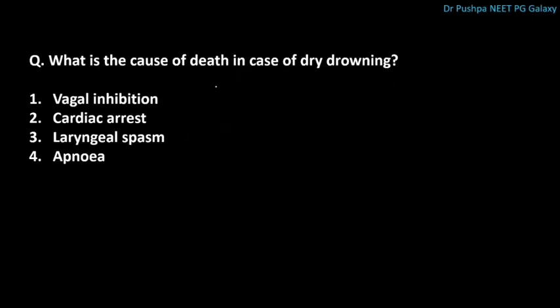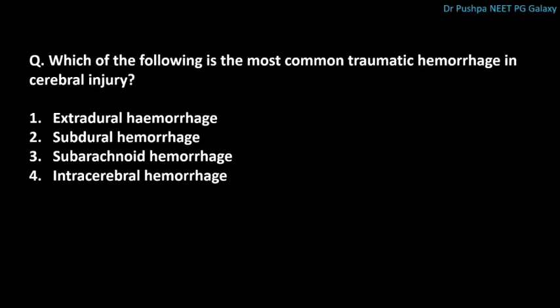What is the cause of death in dry drowning? The correct answer is laryngeal spasm. In immersion syndrome or hydrocution, vagal inhibition is the cause. What is the most common traumatic hemorrhage in cerebral injury? The correct answer is subarachnoid hemorrhage. Extradural hemorrhage is due to rupture of the middle meningeal artery; subdural hemorrhage is due to rupture of bridging veins.